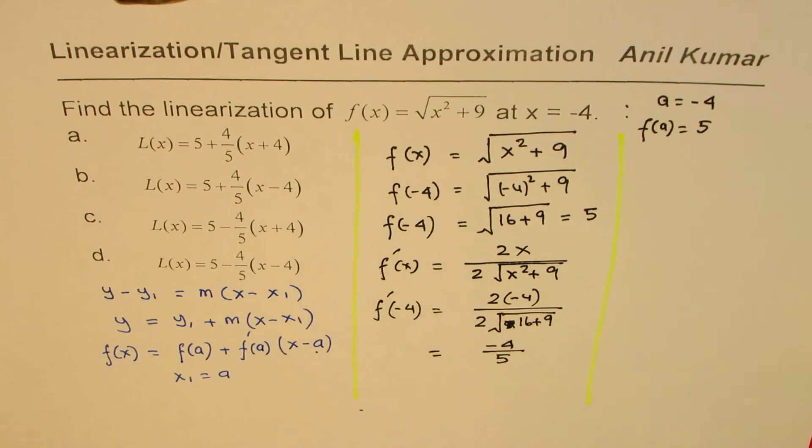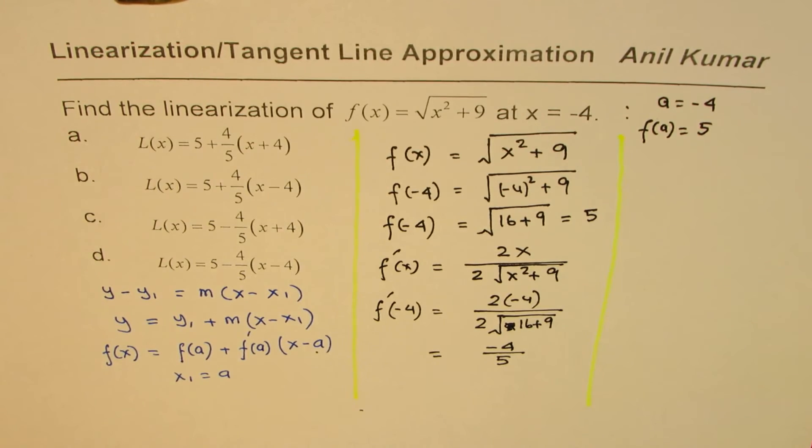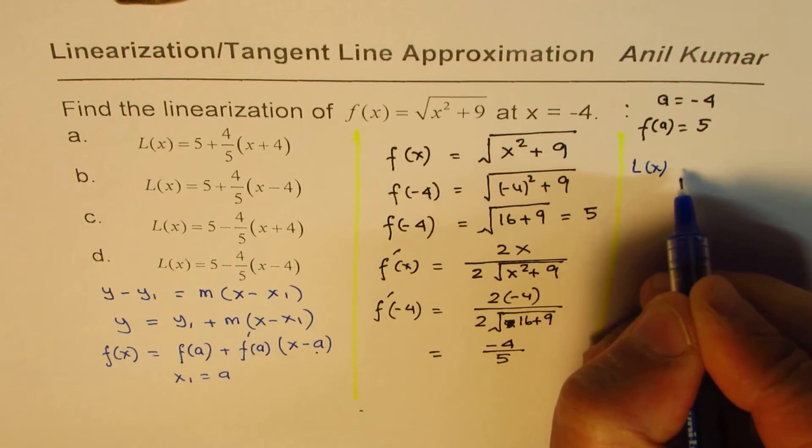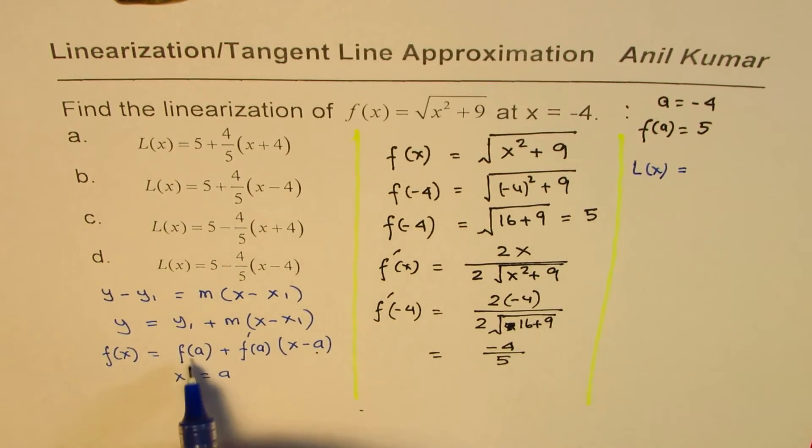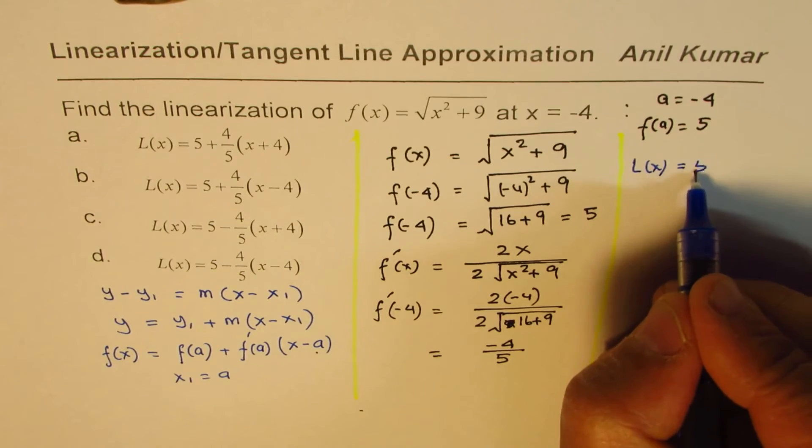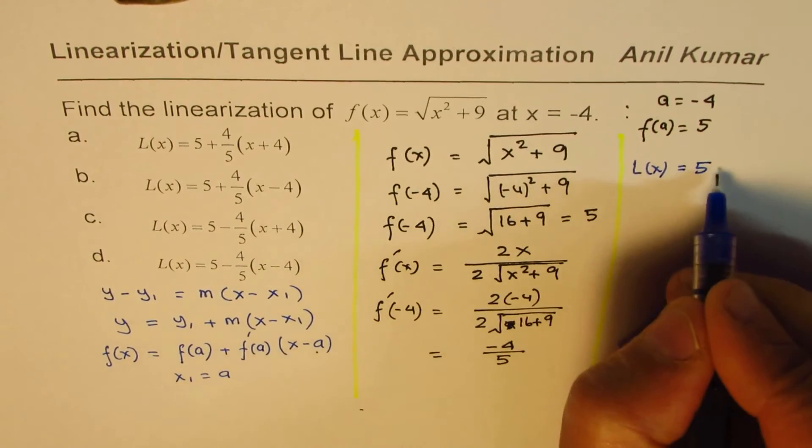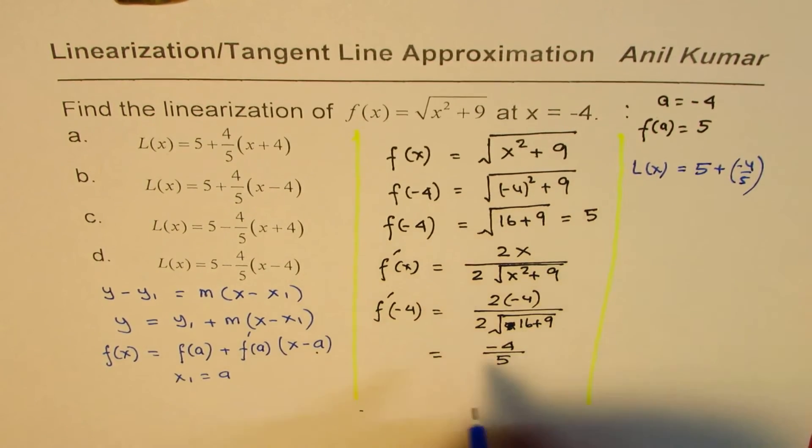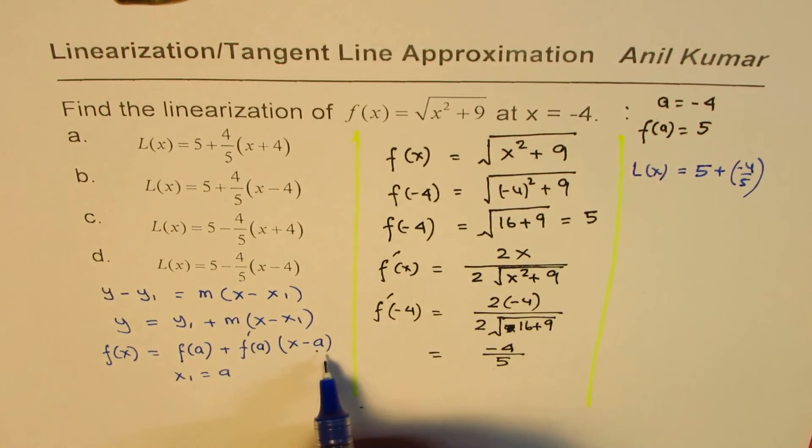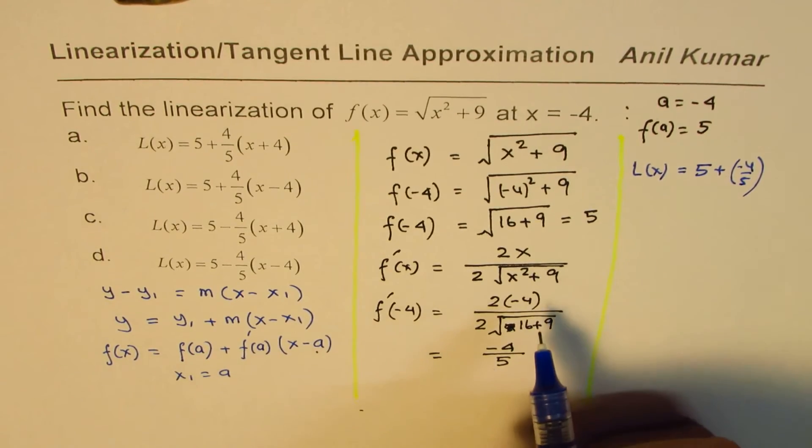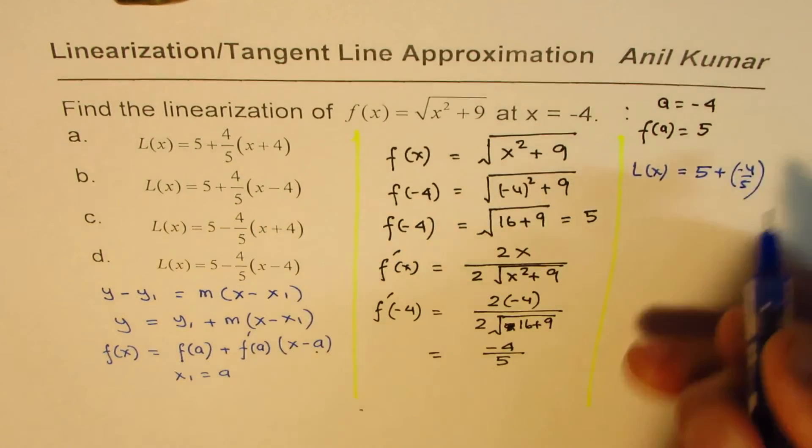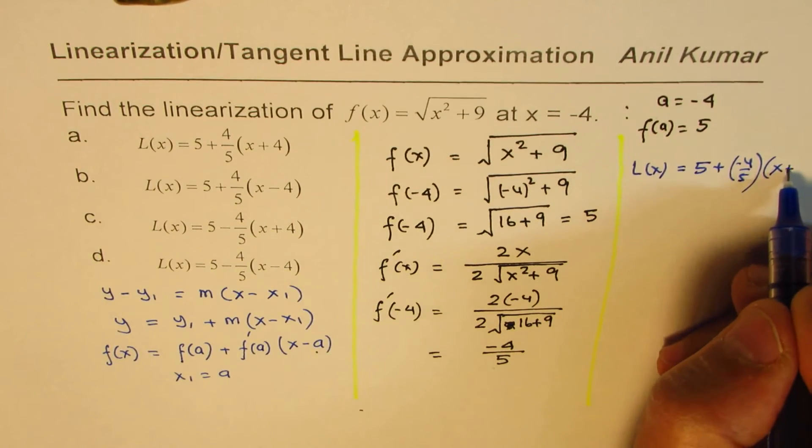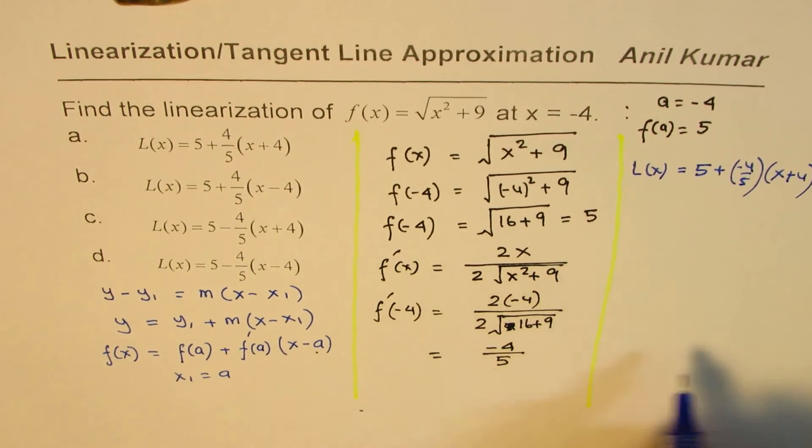So we have all the required information to write down the linearization approximation. So L(x) is equal to f(a), which is 5, plus the derivative, which is minus 4 over 5, times x minus a. So x in our case is a general point, so it will be x minus a. a is minus 4, so that becomes plus 4. So we get our formulas.